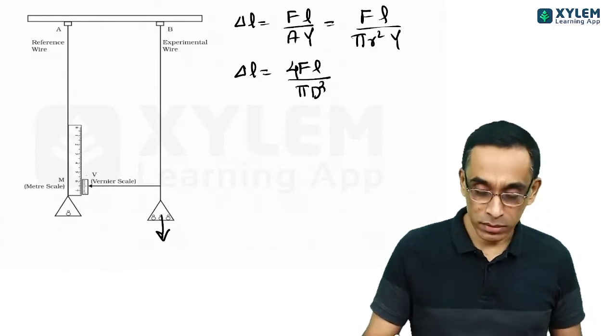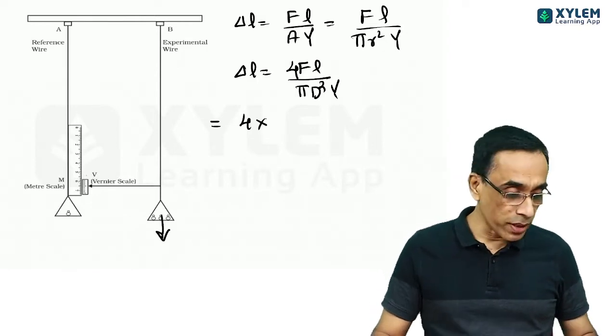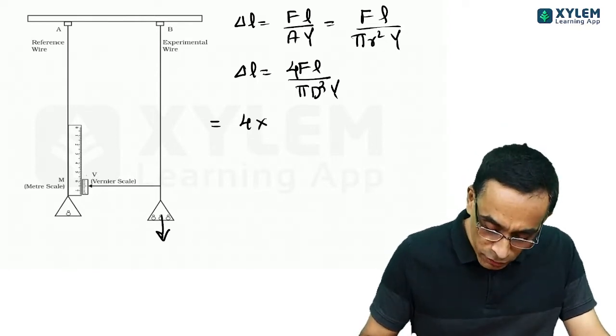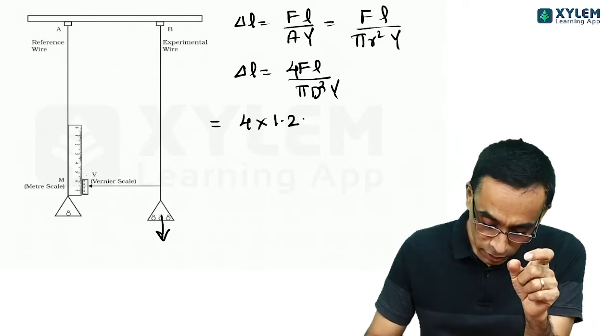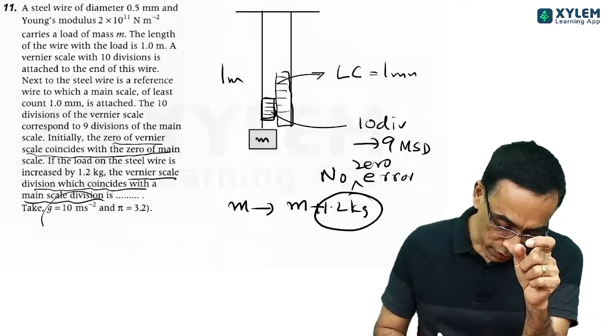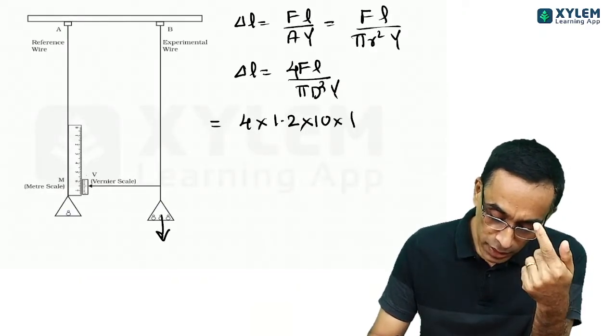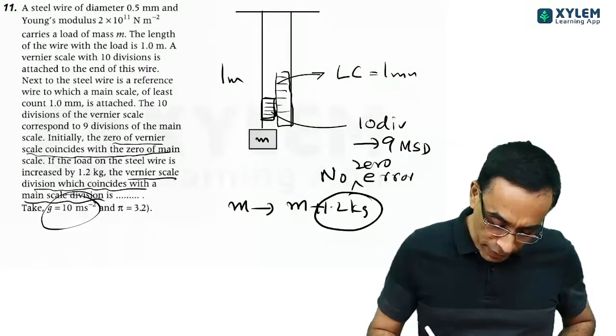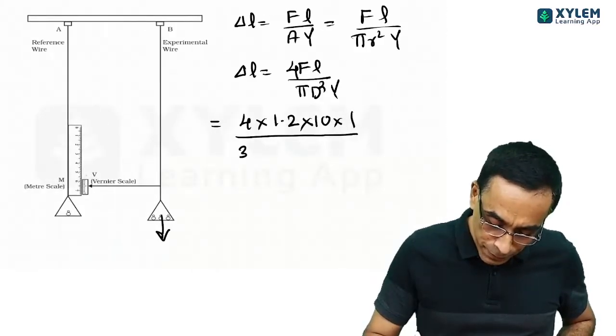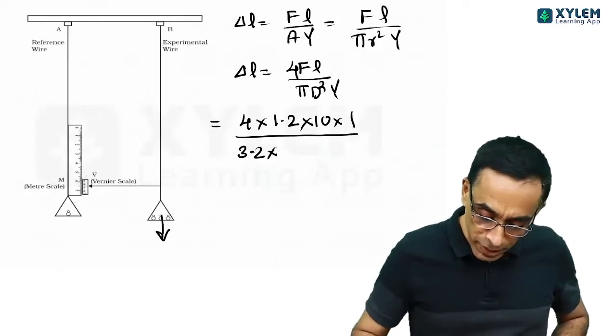Elongation is given by delta L equals F L divided by A Y. So F L by area is normally written as pi R square into Y. But if it is diameter, you can even write this delta L as F L by pi D square by 4 into Y.